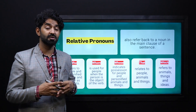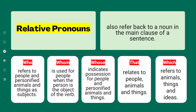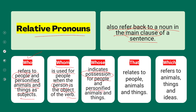Let's look at more about relative pronouns and see the same relative pronouns used in different scenarios. They refer back to a noun in the main clause of a sentence. 'Who' refers to people and personified animals and things as subjects. 'Whom' is used for people when the person is the object of the verb. 'Whose' indicates possession for people and personified animals and things. 'That' relates to people, animals, and things. 'Which' refers to animals, things, and ideas.